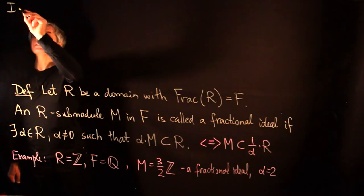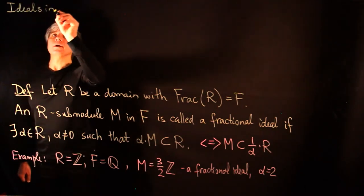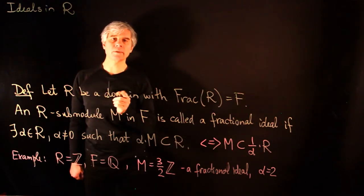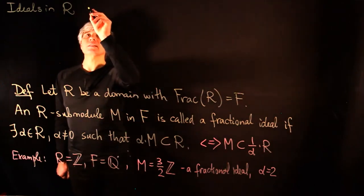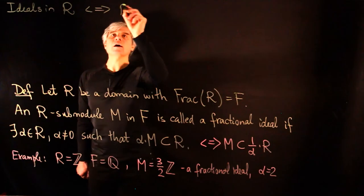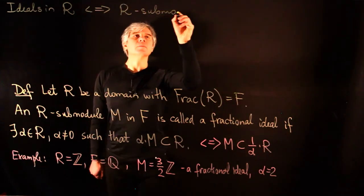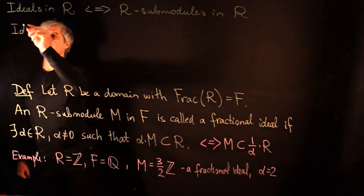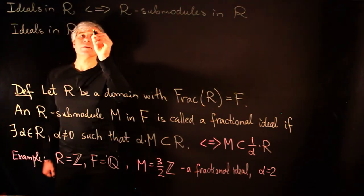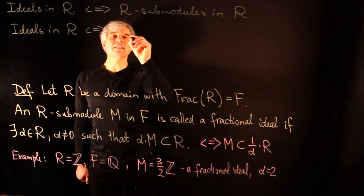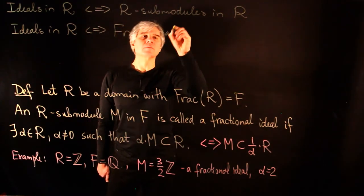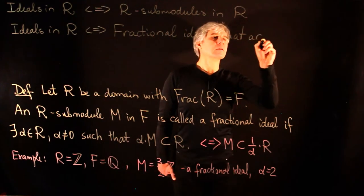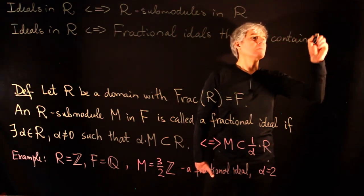Let us think about what ideals in R are. An ideal is an additive subgroup in R which is closed under multiplication by all elements of R. So ideals are exactly R-submodules in R. We can conclude that ideals in R are exactly fractional ideals that are contained in R.